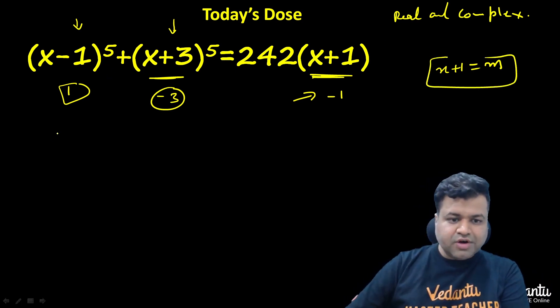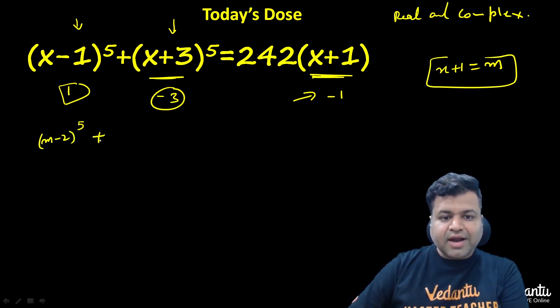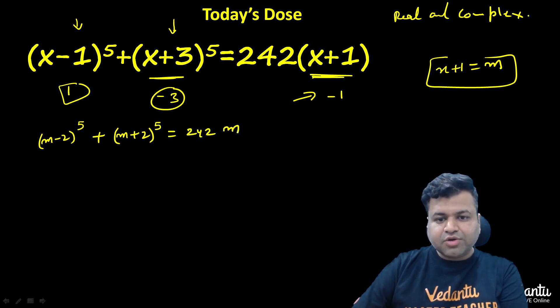Let me show what I'm trying to say. If x plus 1 equals m, then x minus 1 will become (m minus 2) raised to power 5, and x plus 3 will become (m plus 2) raised to power 5. That equals 242 times m.